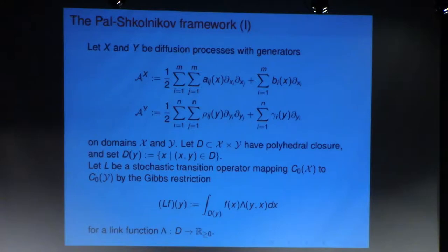So in our setting, Y will be the Laguerre eigenvalues process at a certain level, and X will be the process that we've constructed at all lower levels. And what we want to find is a process Z, which would be the Laguerre-Warren process, that couples them and has all the properties we want.